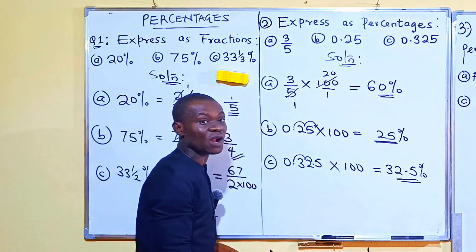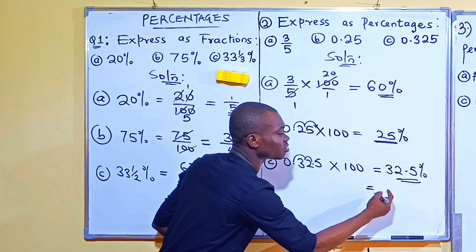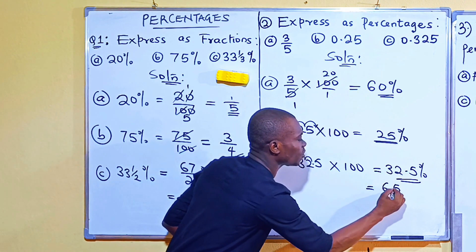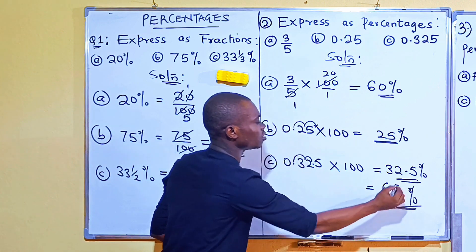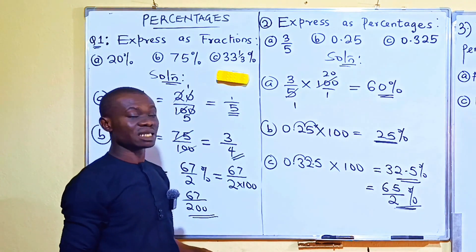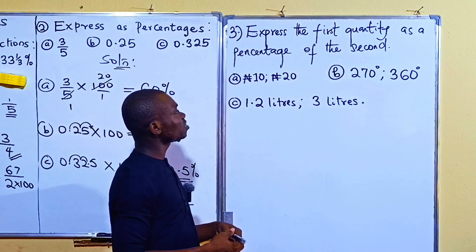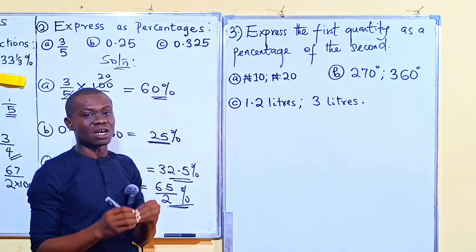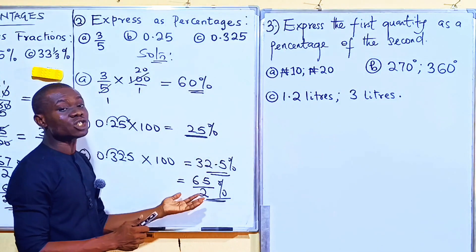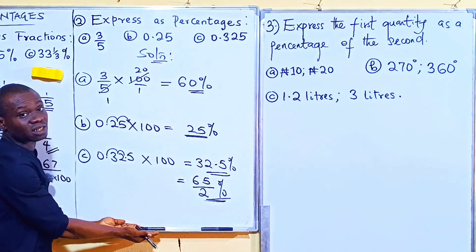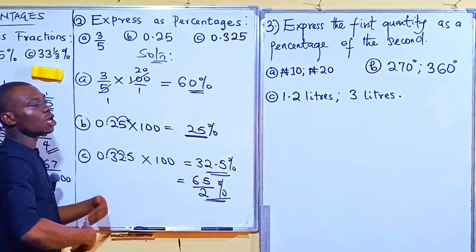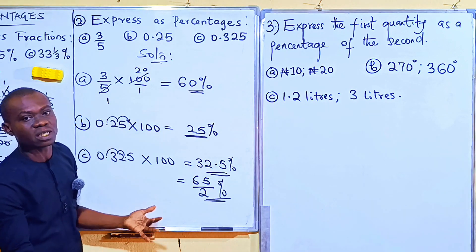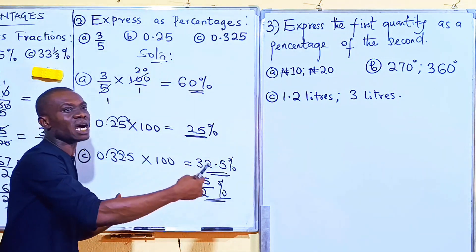You may want to express 32.5% as a fraction: multiply numerator and denominator by 2 to eliminate the decimal, giving 65 over 2 in percent form, which is 65 over 200. Either form is acceptable. The third example asks us to express one quantity as a percentage of another — a very important skill that forms the basis of real life problems like expressing profit as a percentage of cost price, or a discount as a percentage of the exact price.